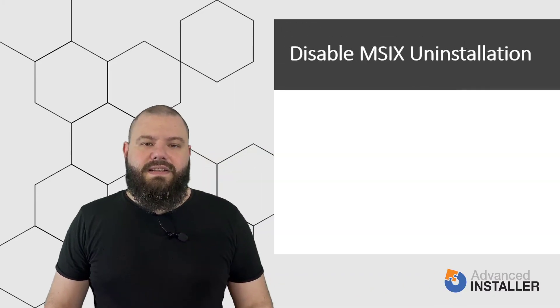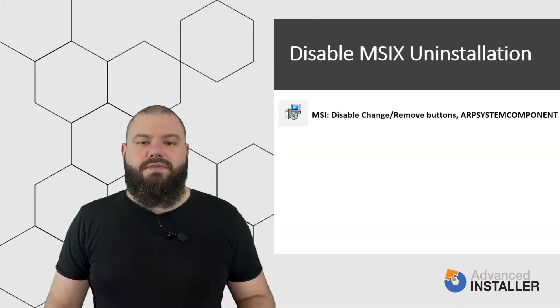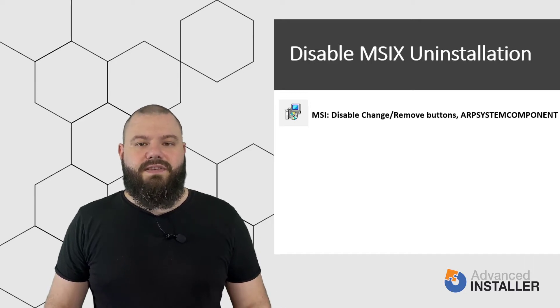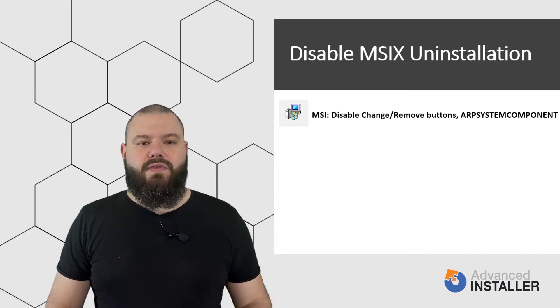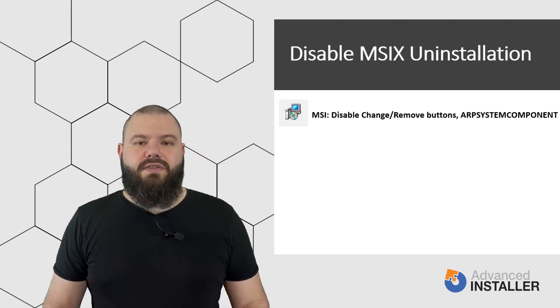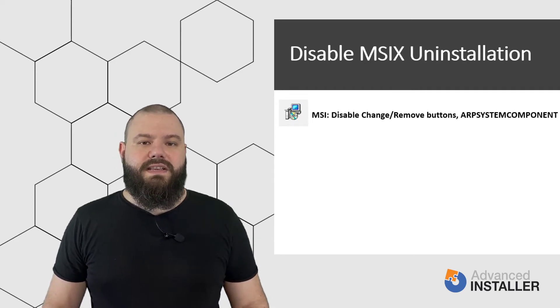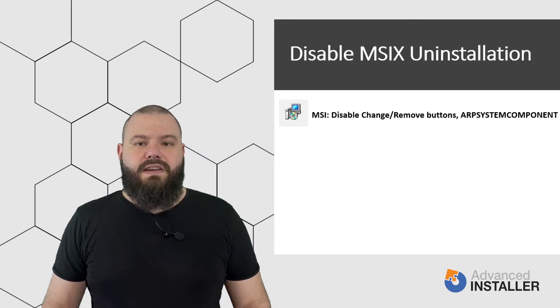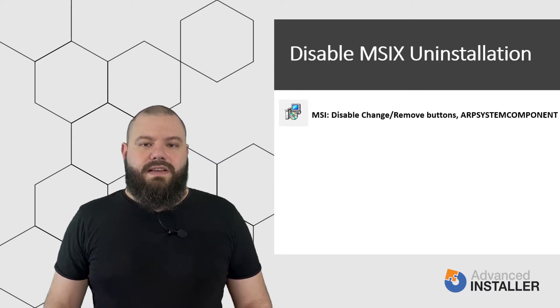This scenario is usually done in managed infrastructures. In the past, the MSIX technology allowed you to disable the change or remove buttons present in Add/Remove Programs, or hide the entry completely using the ARP system component property. However, with MSIX technology, there is no such setting to be placed in the MSIX manifest file, which brings many to question if there is such a way to prevent the removal of certain packages.